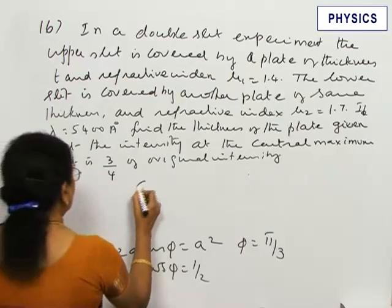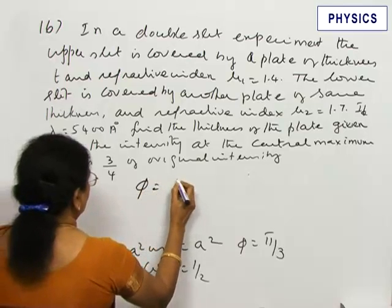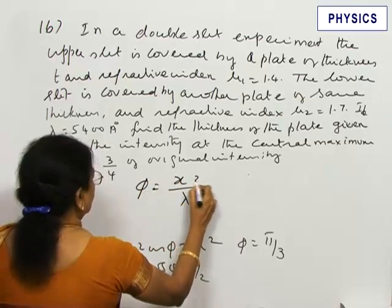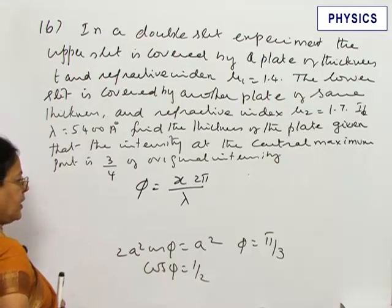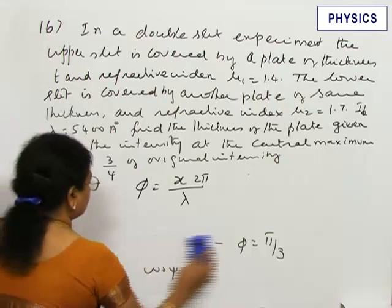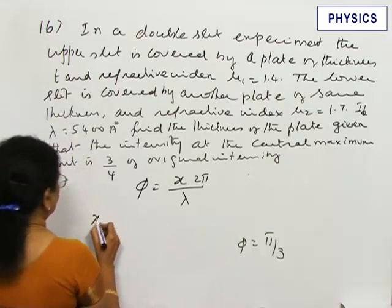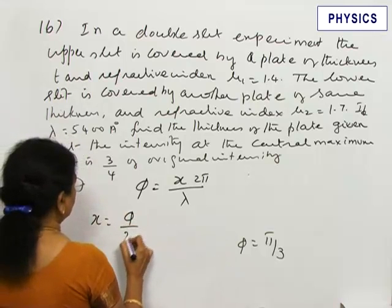If φ is the phase difference and x is the path difference, then φ equals x/λ × 2π, or x, the path difference, equals φλ/2π.